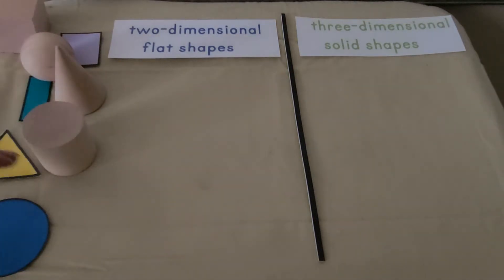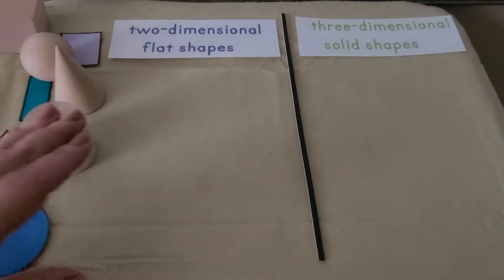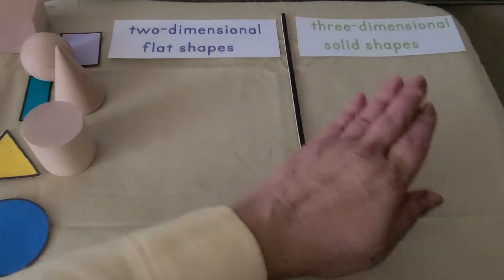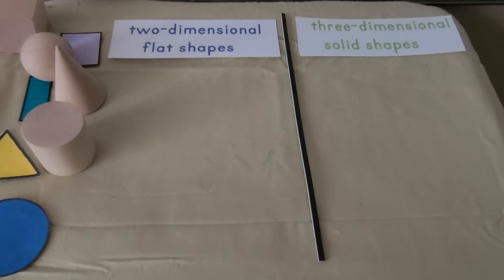We can sort all of these shapes into sets of two-dimensional flat shapes and three-dimensional solid shapes. We can look for a shadow, look for curves, or see if it takes up space. Then it's a three-dimensional solid shape.